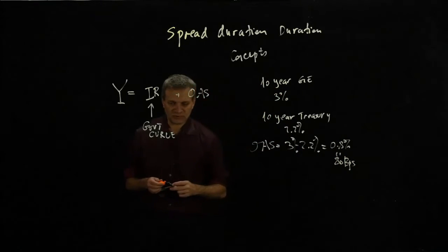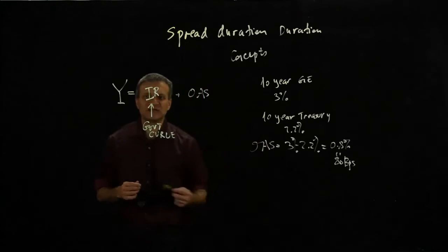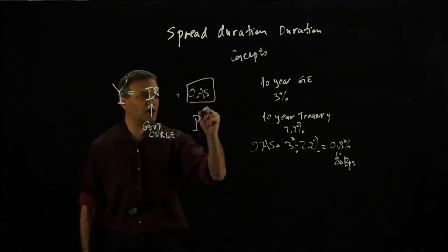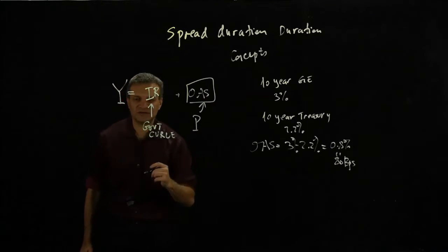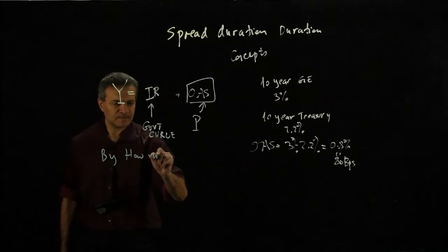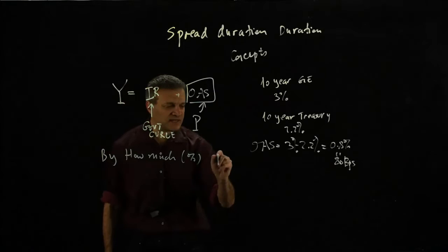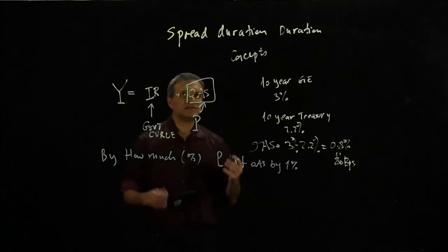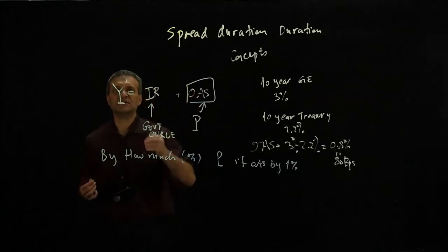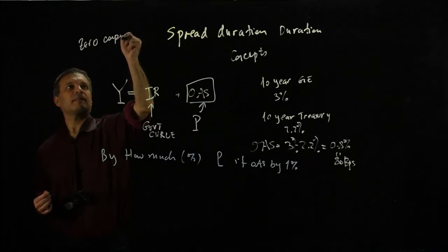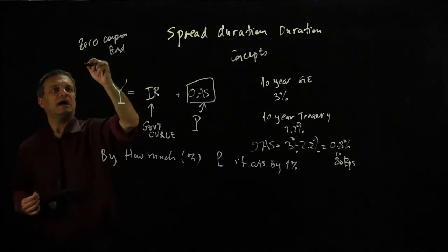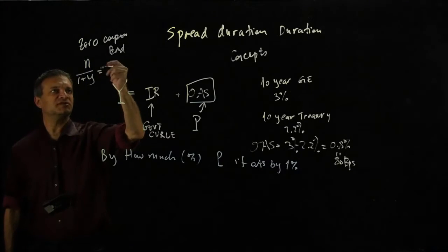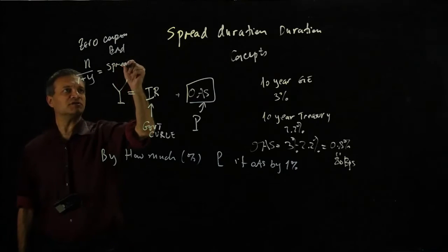What I want to know — just like with durations — is the sensitivity of the price of the bond to the option-adjusted spread. In other words, by how much in percentage terms will my price move if the OAS moves by 1%. In the simplest case of a zero coupon bond, my maturity of the bond divided by 1 plus the yield is going to equal the spread duration. And it will also be equal to the duration.